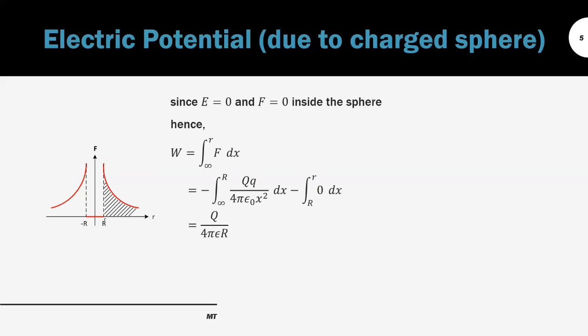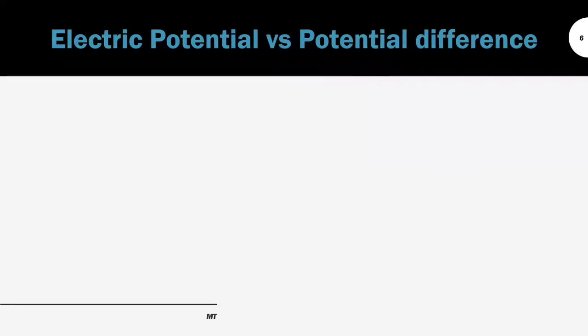Continuing the integration, the work done equals Q divided by 4πεr. For the electric potential outside the sphere, the formula for V is the same as for a point charge. When the point charge is inside the sphere, where the distance is less than the radius, V equals Q divided by 4πεR and the electric potential is constant, because the charge Q and the radius R are fixed and do not change.